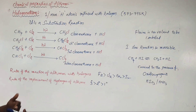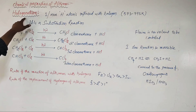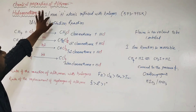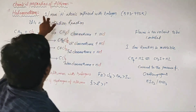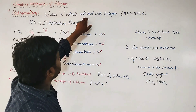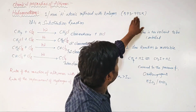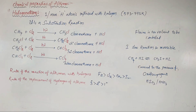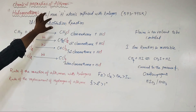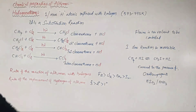Alkanes undergo substitution reactions under certain conditions, specifically halogenation and sulfonation. In halogenation, one or more hydrogen atoms are replaced by halogen atoms at a temperature of 573 to 773 Kelvin.